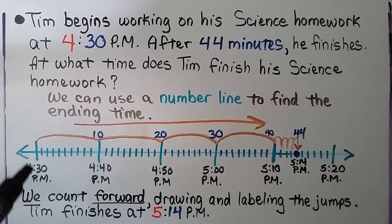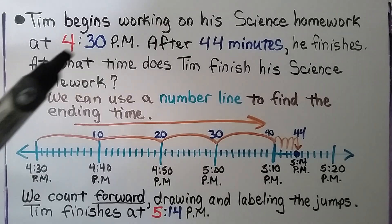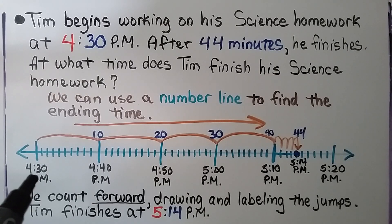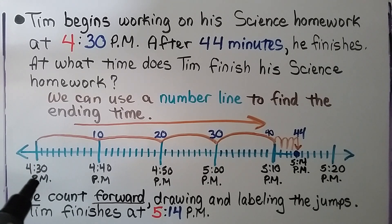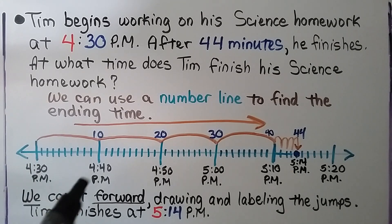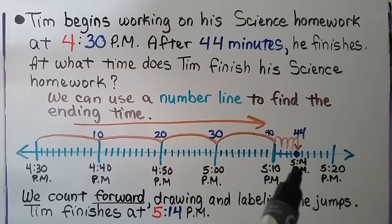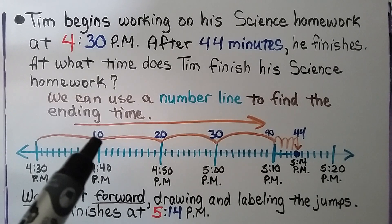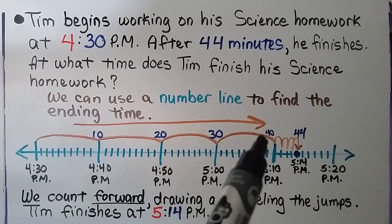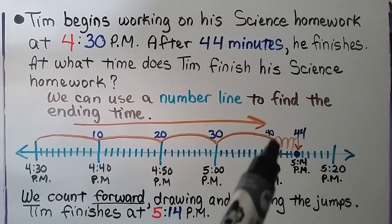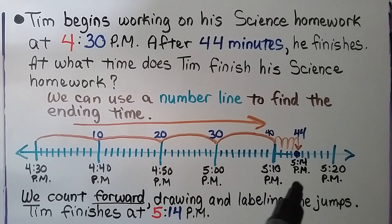On our number line, we start at 4:30, the beginning time. Because 30 is a multiple of 10, we can count by tens: 4:30, 4:40, 4:50, then 5 o'clock, then 5:10. Then we count on by individual minutes — 41, 42, 43, 44 — until we land at 5:14 p.m.